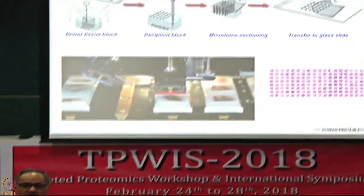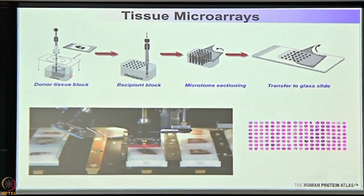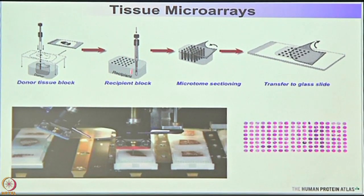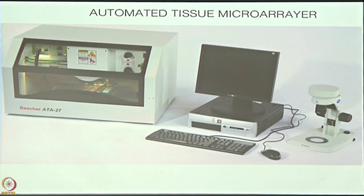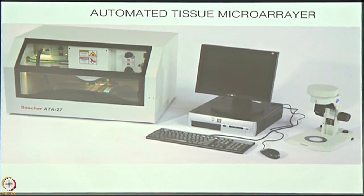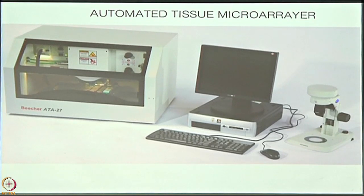This shows briefly how tissue microarrays are made: you take a core from the block and put it into a different block that has space for more cores. This is cut as a section, put on a slide, and stained — an ordinary H&E stain shows how it looks. The machine that does this is called a tissue microarrayer; there are many types. We use a manual tissue microarrayer in our lab, which is easy to use, while our Swedish colleagues use more sophisticated automated ones. Automated microarrayers can make up to 20 to 30 microarray blocks a day, but if you don't have that workload, manual is better.